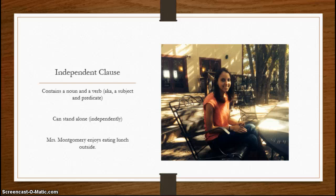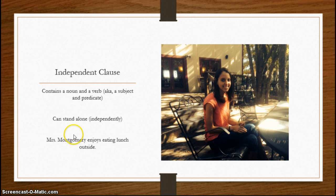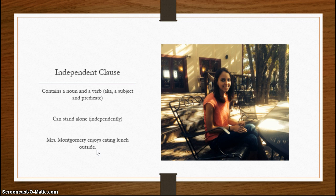So here we have our independent clause about Mrs. Montgomery: 'Mrs. Montgomery enjoys eating lunch outside.' Here's my subject — Mrs. Montgomery — and here's my verb — enjoys. So I have a whole predicate here. What does she enjoy? Eating lunch outside. All of this works together. So an independent clause can stand alone, and it has both a noun and a verb — which we call the subject and the predicate — because it's independent.